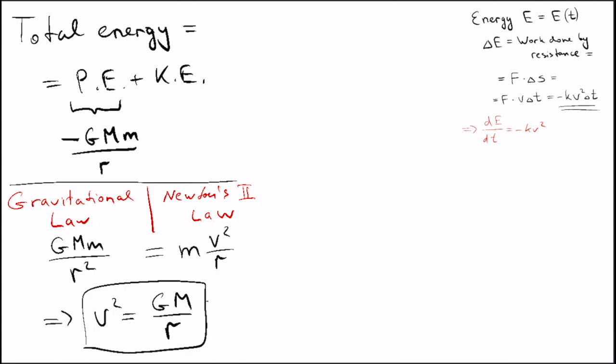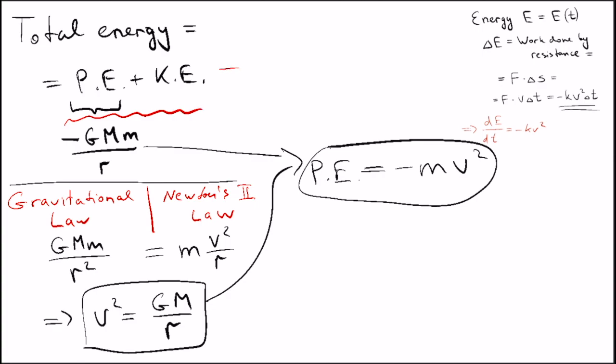Implying that we can write the potential energy as... the total energy is the sum of potential and kinetic energies. So, it becomes minus mv squared over 2.